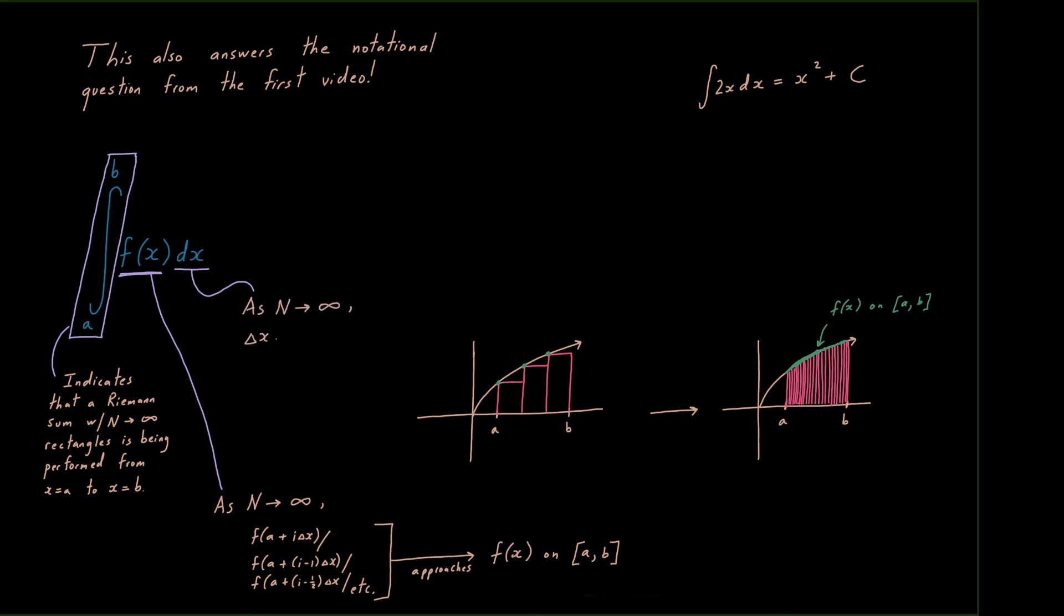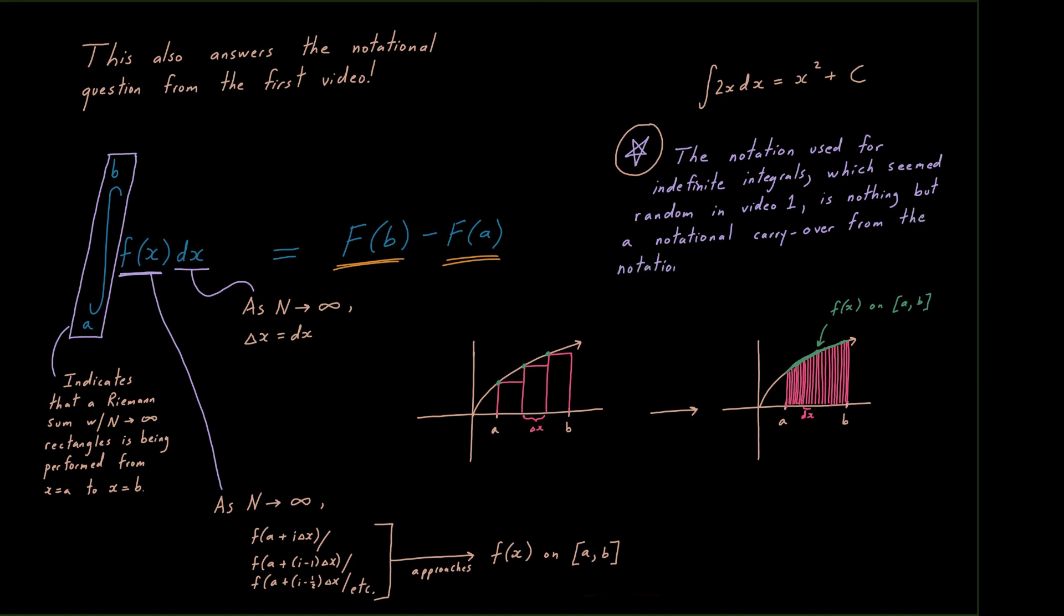Now the key player, that dx, as n goes to infinity, delta x we can say it approaches dx, we can say it is dx. It captures the same idea. dx again is an infinitesimally small change in x. And we just proved in this video that this all equals some anti-derivative stuff on the right, it equals a difference in anti-derivative values. So the notation that we used in the first video for indefinite integrals which seemed random, seemed totally random in video one, is nothing but a notational carryover from the notation used for definite integrals.